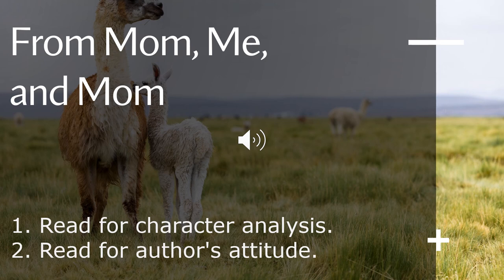As for Monday, we are going to complete working on the From Mom, Me and Mom text. On this day, we are going to read for character analysis and we are going to read for author's attitude. For the character analysis, we are going to differentiate between direct and indirect characterization within texts. Our word wall will consist of character, analyze, author's attitude, infer, direct characterization, and indirect characterization. We are going to dig deep into author's attitude and bias and we are going to implement by using interactive activity 2.